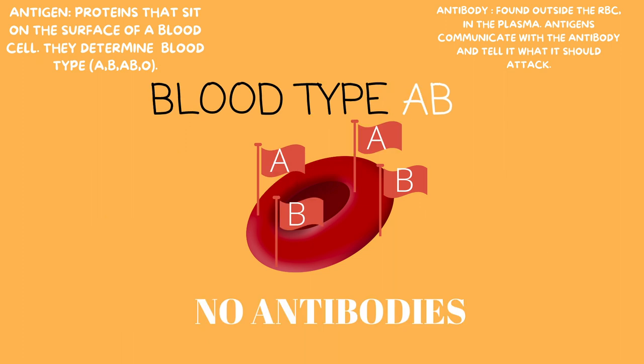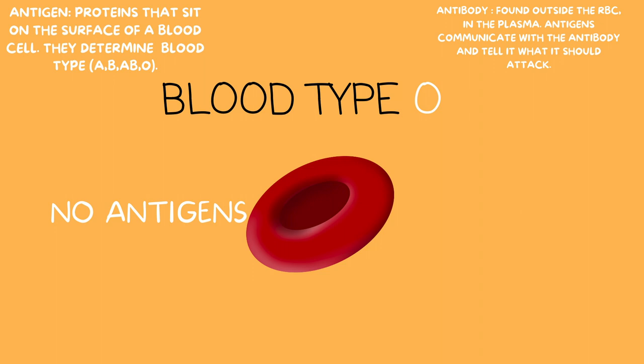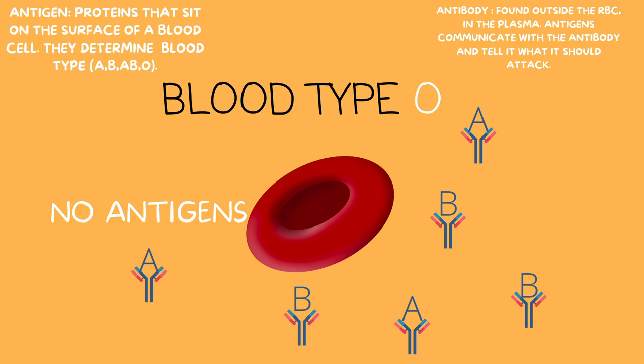In blood type AB, this blood is representing both A and B, so it doesn't need to fight anyone — it's compatible with everyone. So it will have no antibodies. In blood type O, this blood has no flags — it represents no one, which means it fights everyone. Blood type O has no antigens, but it does have an army of antibodies to fight against everyone, meaning fighting against both A and B. So if A comes around or B comes around, blood type O is going to fight against it.